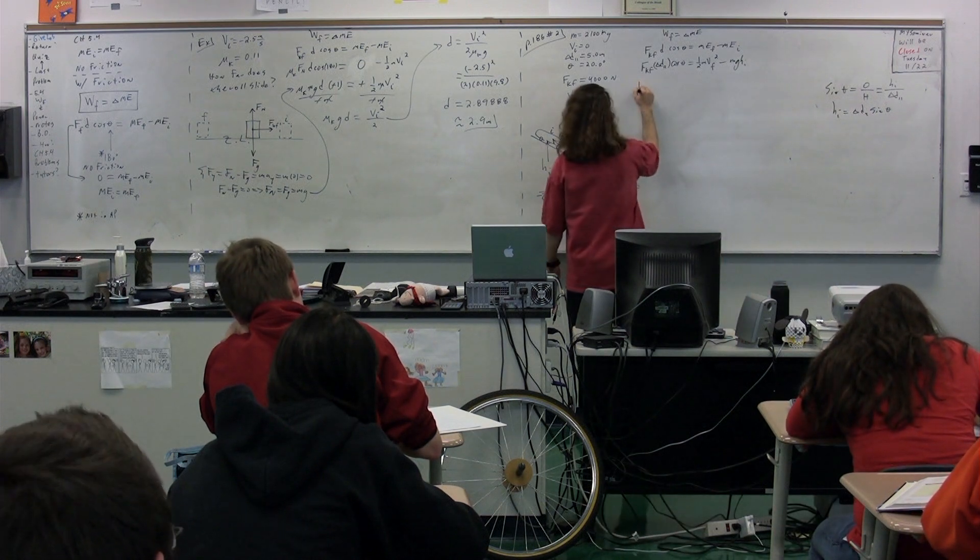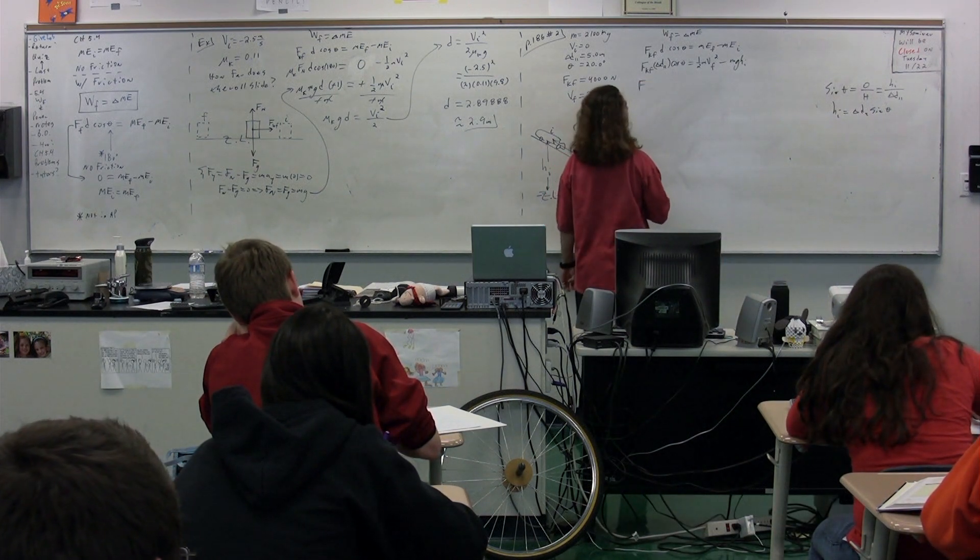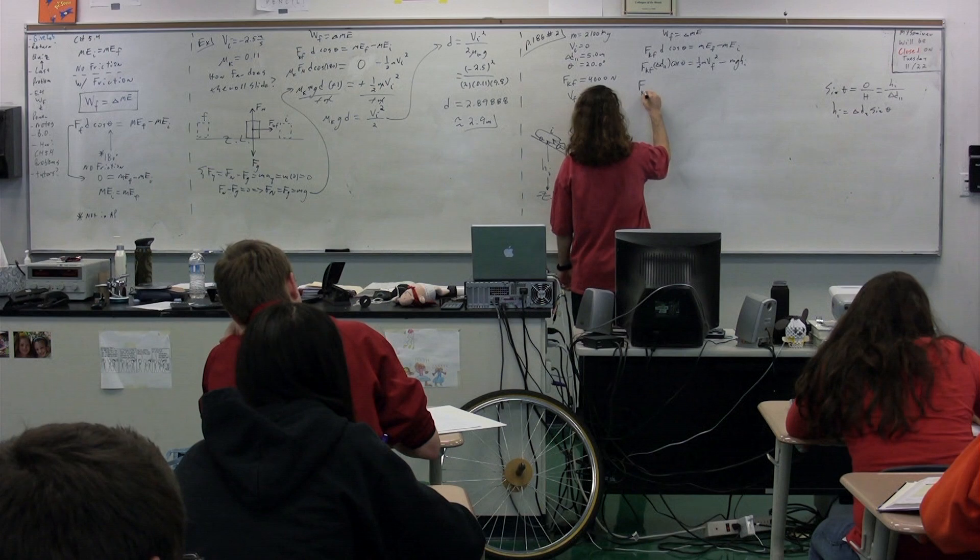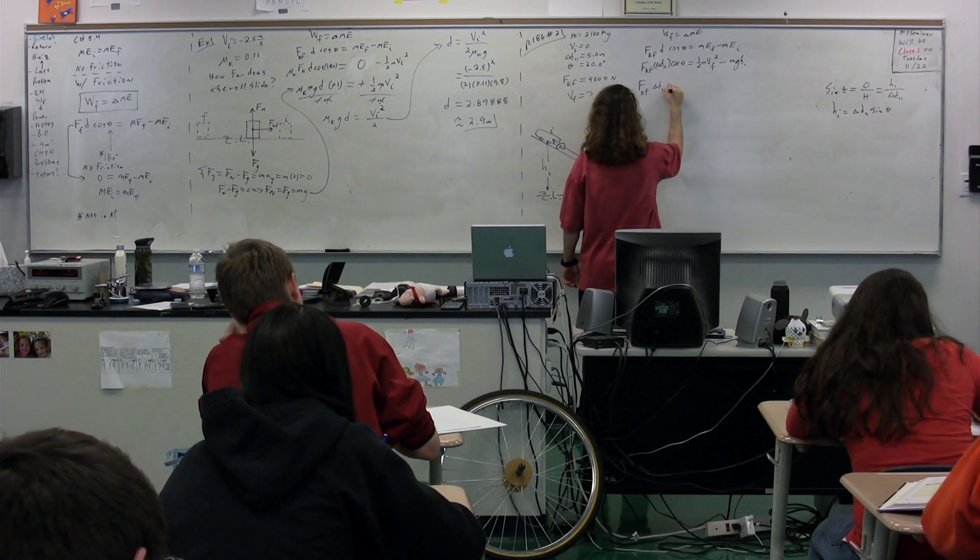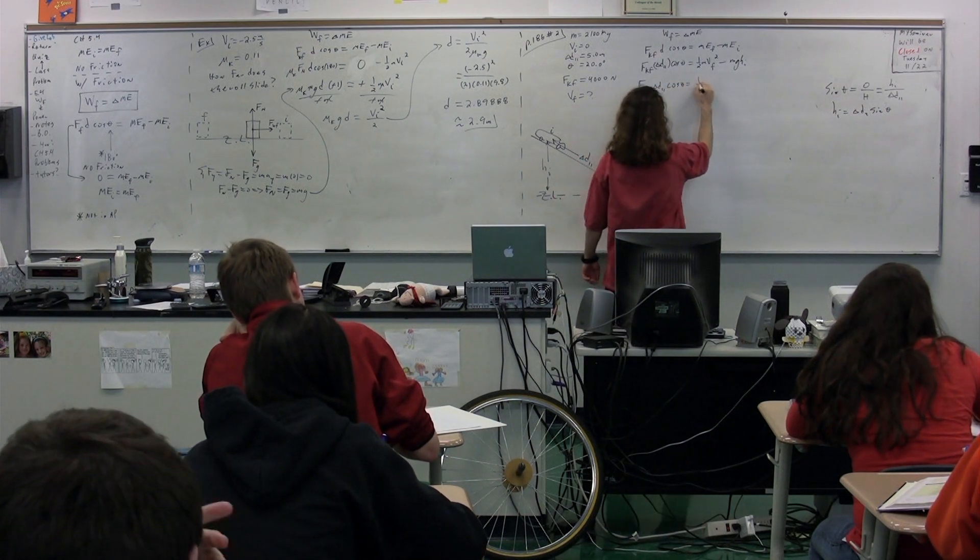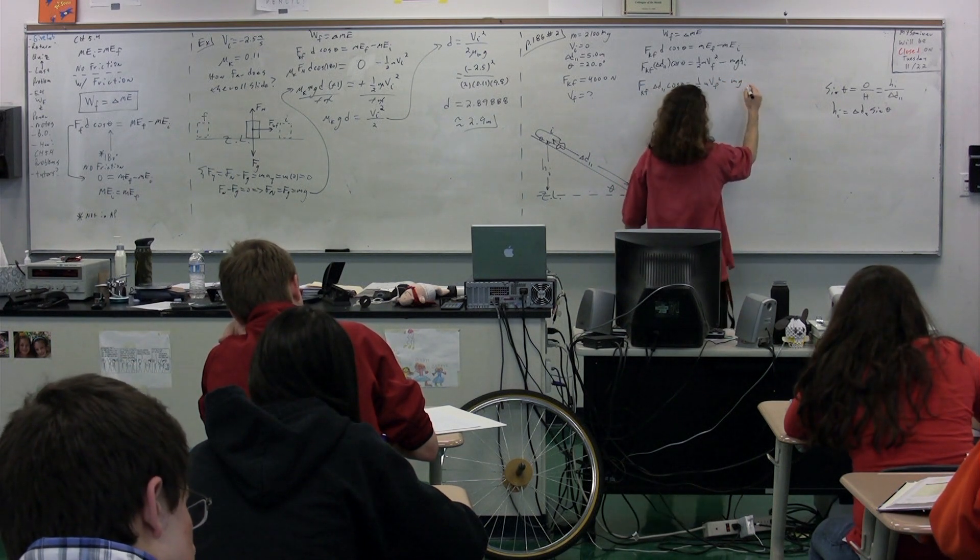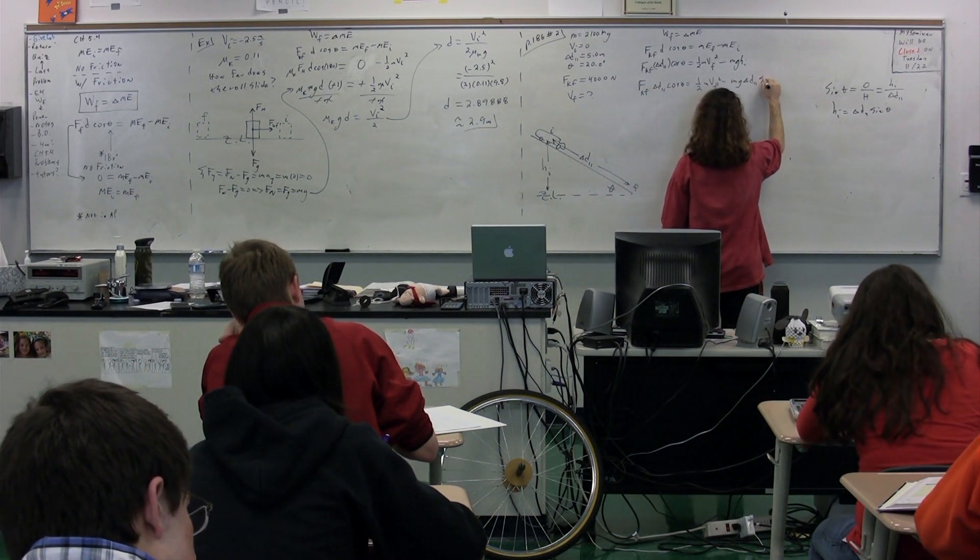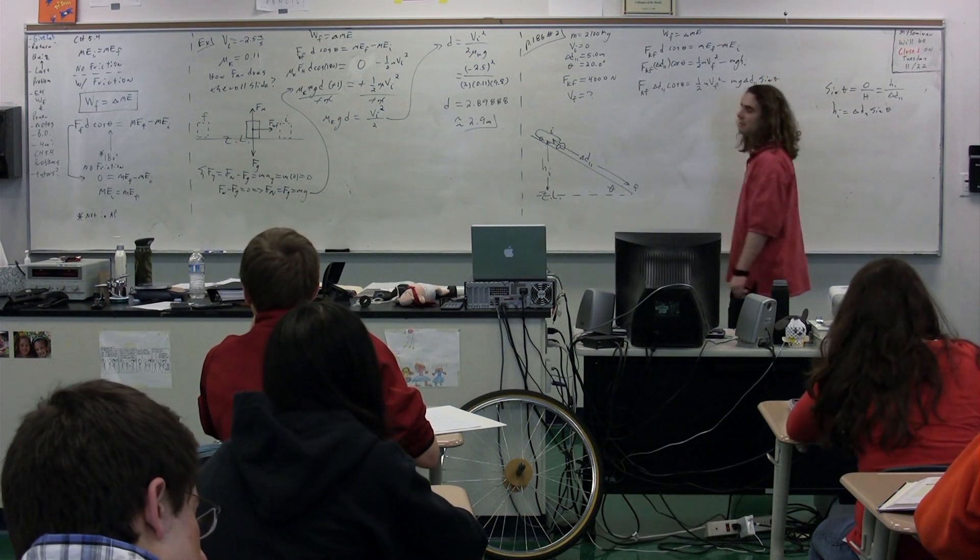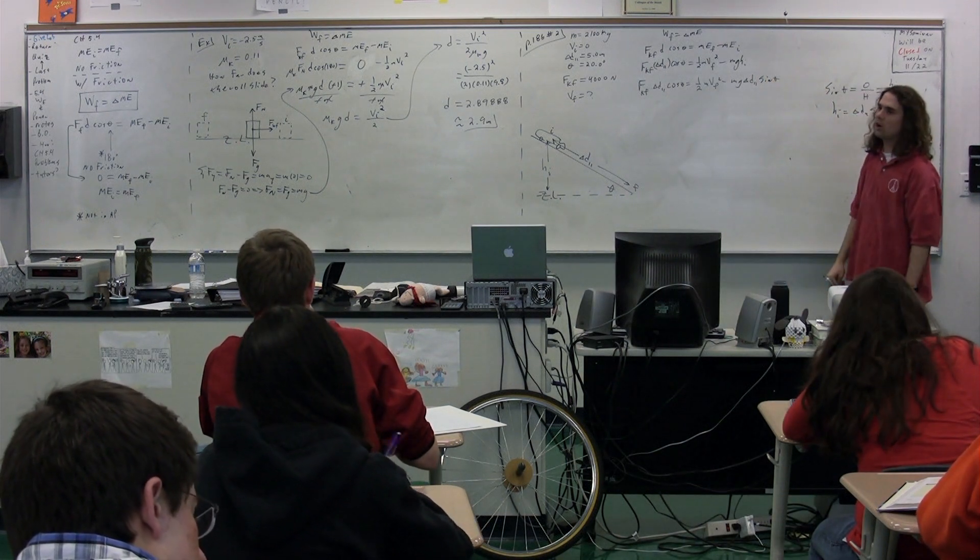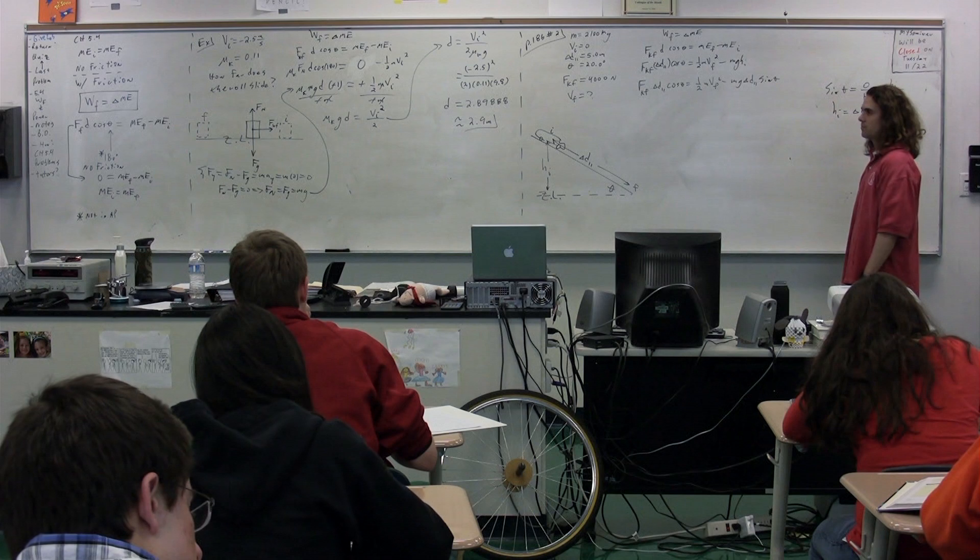So we can now write out our long equation here with all variables, and we can start substituting. So force of kinetic friction times delta-D parallel times the cosine of theta equals one half mass times v final squared minus mg times delta-D parallel times the sine of theta.